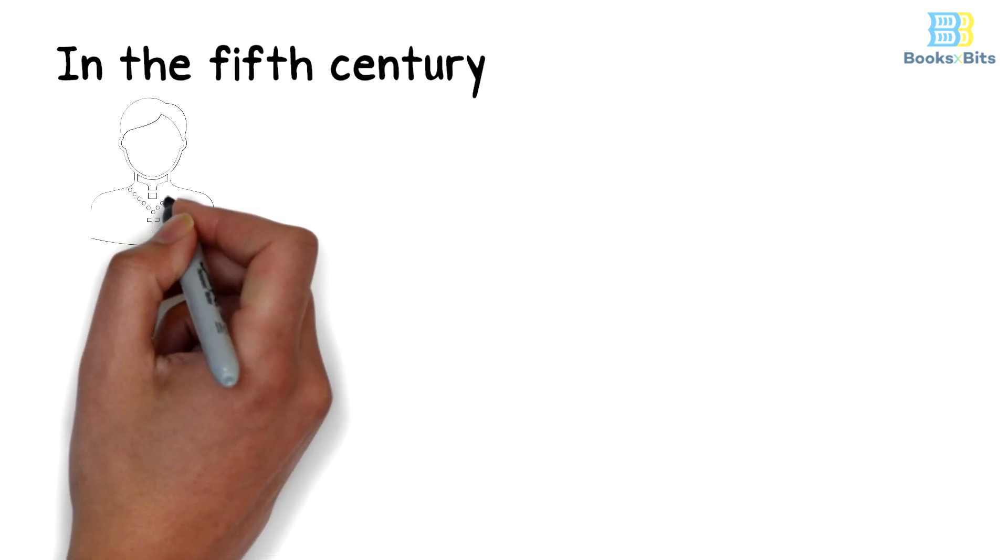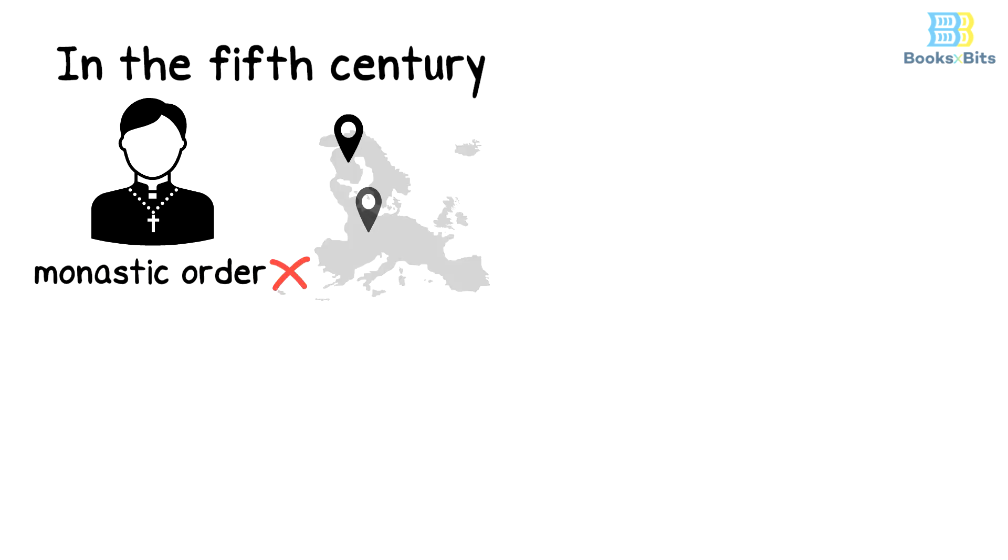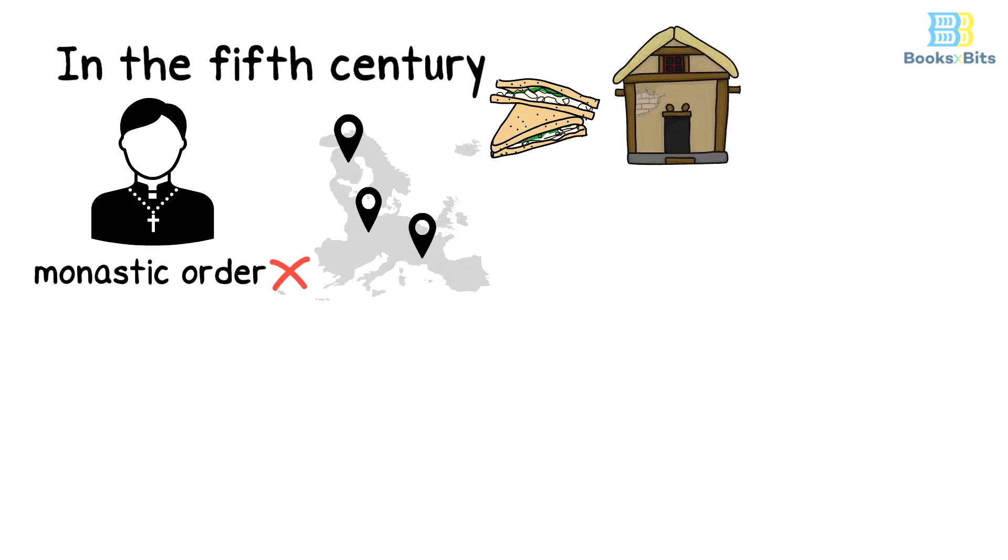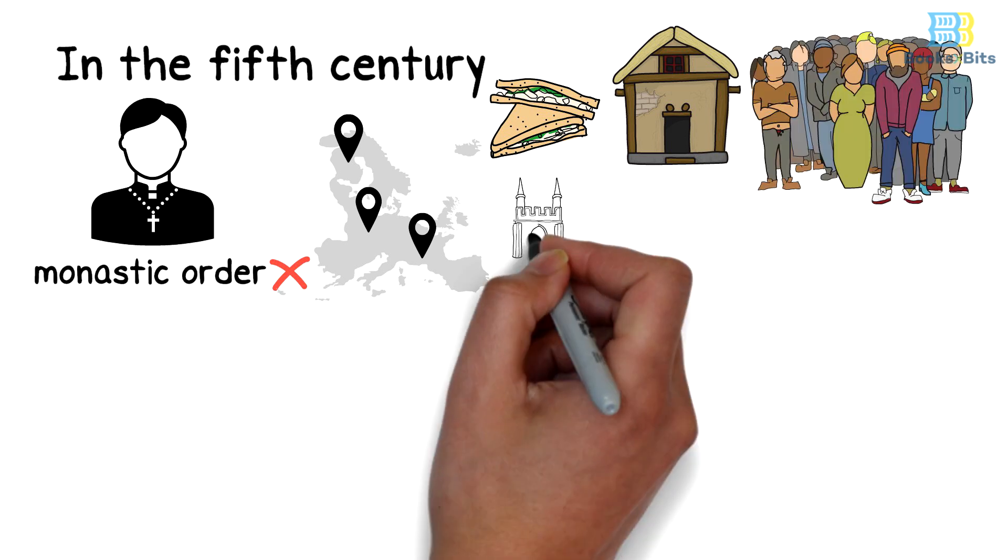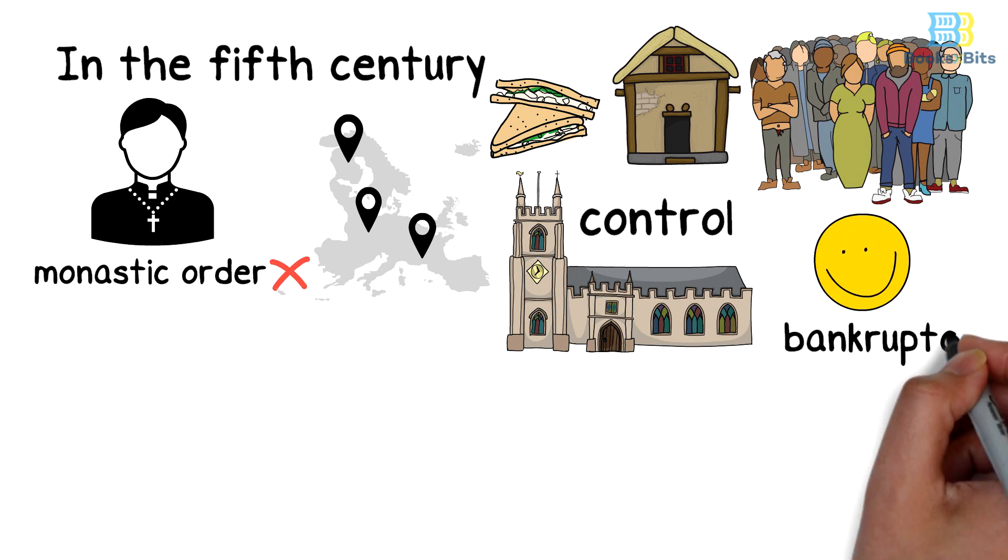In the 5th century, there was a group of monks who didn't belong to any specific monastic order. They roamed Europe begging for food and shelter from the villagers. The church hated these monks because it couldn't control them, as they were very happy with the freedom they lived in, despite their bankruptcy.